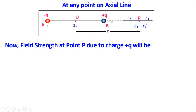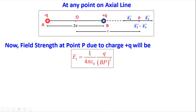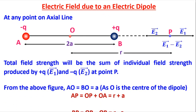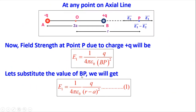Let's calculate the field strength at point P due to charge plus q. Using the formula E1 = (1/4πε₀) × q / (BP)². Substituting the value of BP = r − a, we get E1 = (1/4πε₀) × q / (r − a)². This is the expression for E1, where the distance from plus q to point P is BP = r − a.